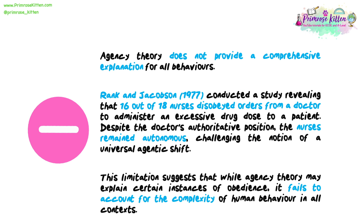The agency theory does not provide a comprehensive explanation for all behaviours. Rank and Jacobson, 1977, conducted a study revealing that 16 out of 18 nurses disobeyed orders from a doctor to administer an excessive drug dose to a patient. Despite the doctor's authoritative position, the nurses remained autonomous, challenging the notion of a universal agentic shift. This limitation suggests that while agency theory may explain certain instances of obedience, it fails to account for the complexity of human behaviour in all contexts.